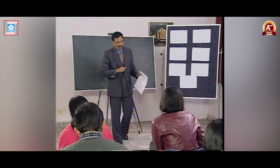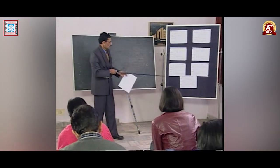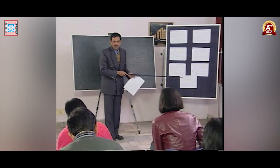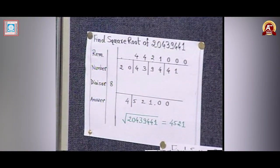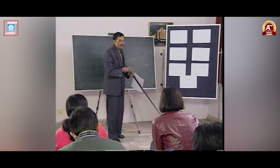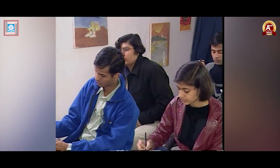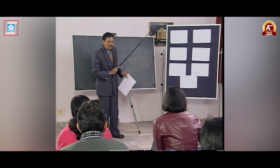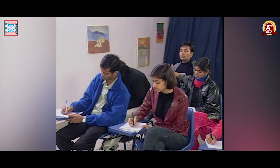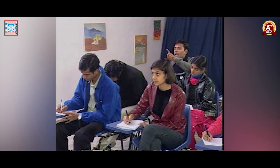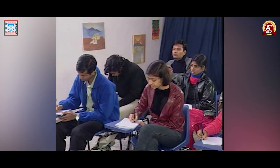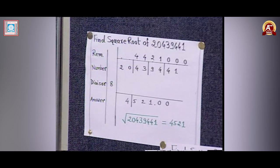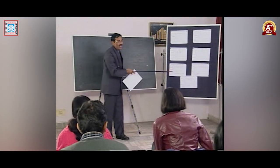Find the square root of 20439441. Write the number and group from right to left: 41, 94, 43, 20 — four groups. Nearest lower number whose square is near 20 is 4, since 4 squared is 16. Write 4 as the first digit of the answer. Divisor is 4 into 2 equals 8. First remainder: 20 minus 16 equals 4. This first step is extremely important — you must select the correct lower digit, divisor, and first remainder carefully. Once done correctly, the rest is division.